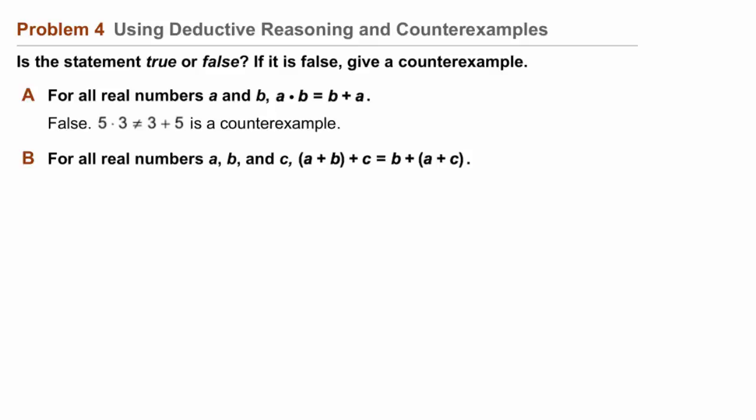We have a couple of options. One is to continue plugging in values, trying to prove this false by finding a counterexample. But, probably more efficiently, is consider what properties we might be able to use to prove this is true, because we have a lot of properties of math that we can use.